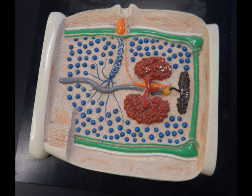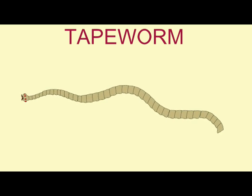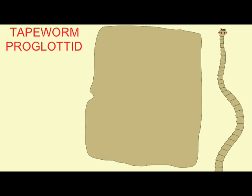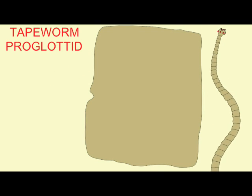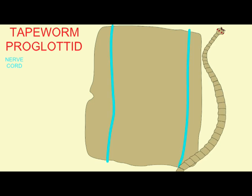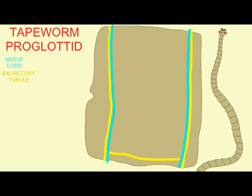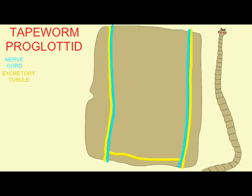Tapeworms do not contain digestive structures, given that all nutrients are absorbed through the tapeworm skin from the food in the intestine of the host.